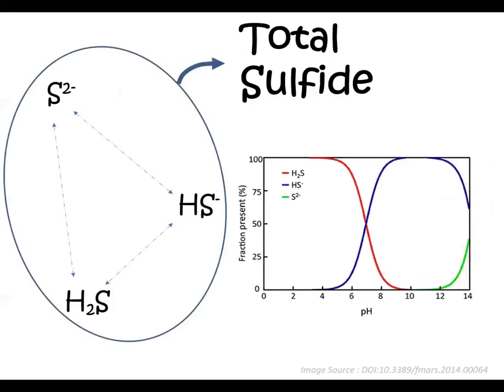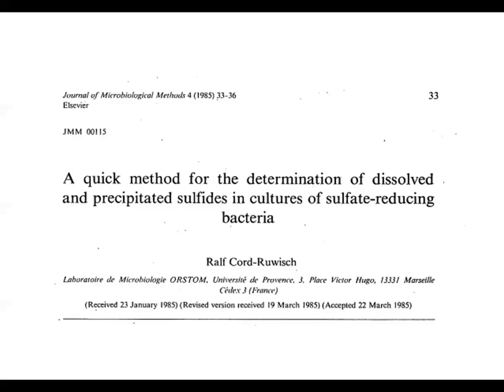The pH affects the form of sulfide. The method developed by Ralph Codruvich in 1985, so if you use this method, you can cite this publication.